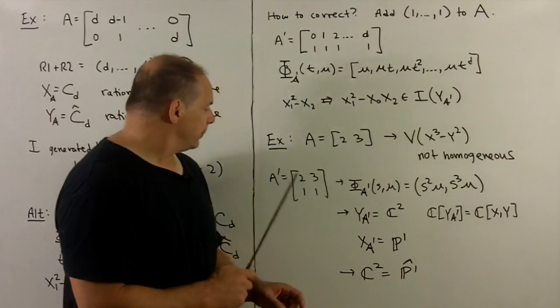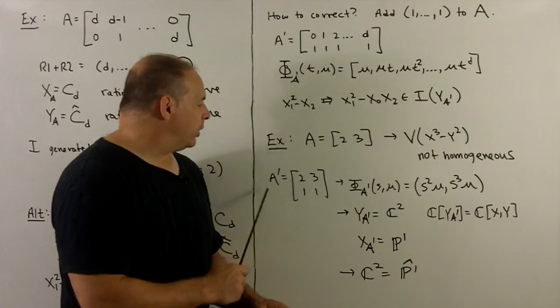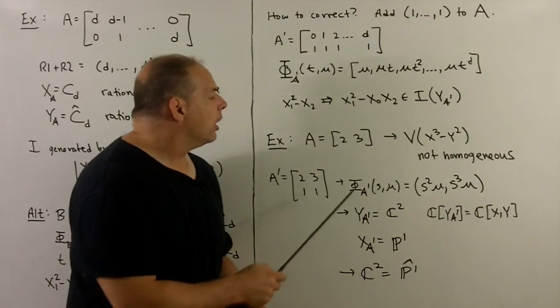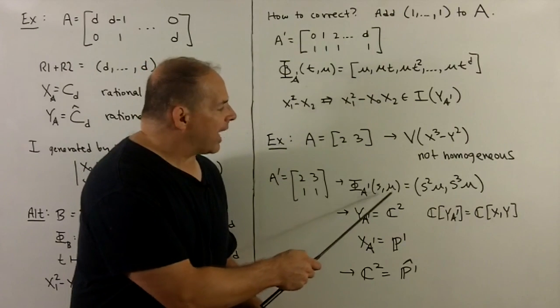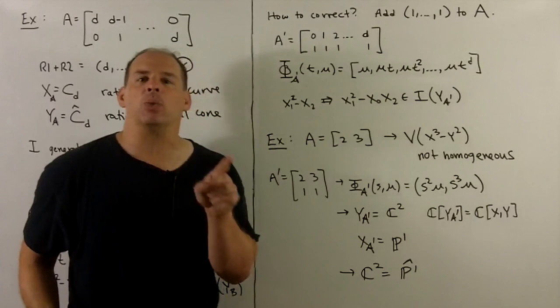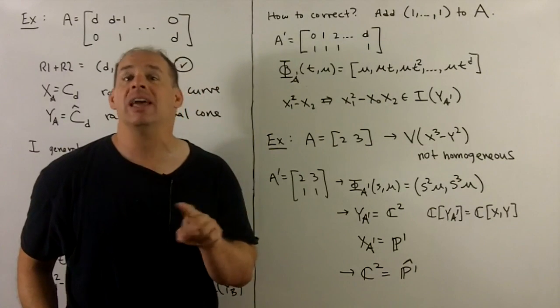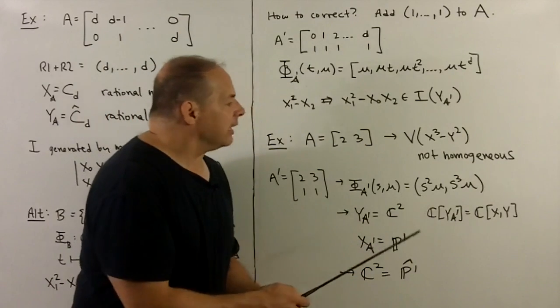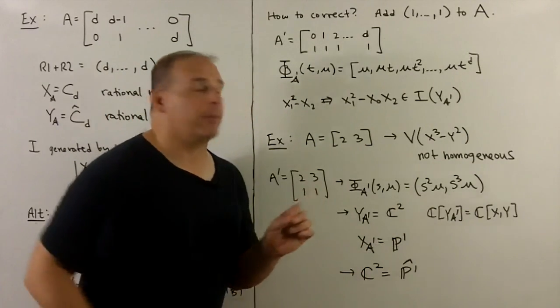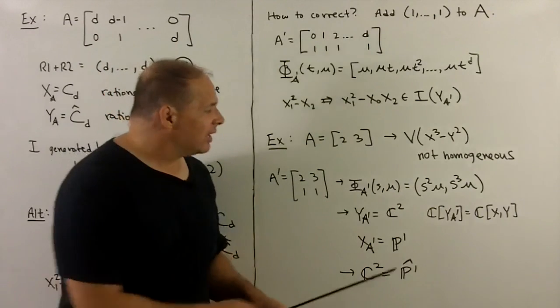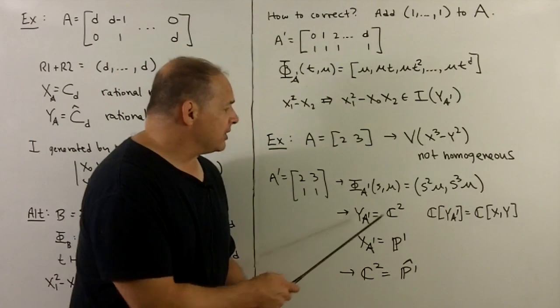Now, we'll note, I can correct by putting in a row of 1s, so I now have an A prime. Our phi sub A prime, we added an extra variable, put that variable in each coordinate, and now we see that x and y are independent. So before there was a relation, now there's no relation because of the mu. That means the coordinate ring for y sub A prime is just polynomials in two variables, which means that y sub A prime is C2.